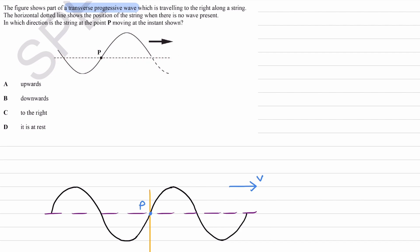In which direction is the string at point P moving at the instant shown? P has to remain in the same vertical line. P moves up and down - this is a transverse wave. As the wave moves towards the right, this is the direction of wave propagation, energy gets transferred in that direction as well.